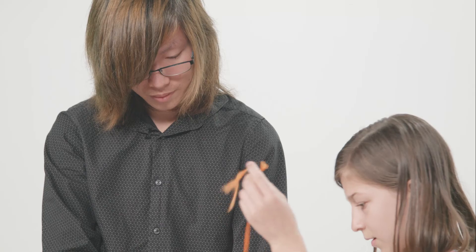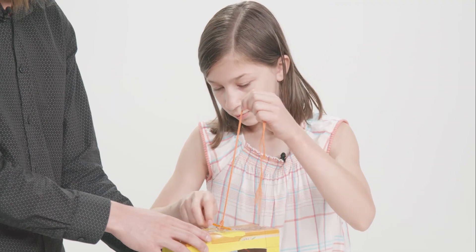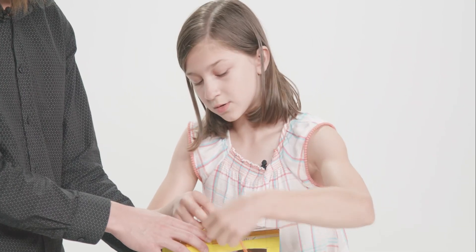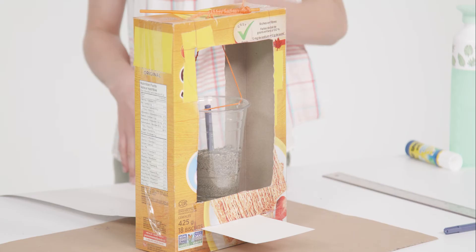And then we're going to take our little stick and put it through here and wrap it around. That way the cup won't just fall down, right? Yeah. And there we go. Our seismograph is done. Okay. Finally.